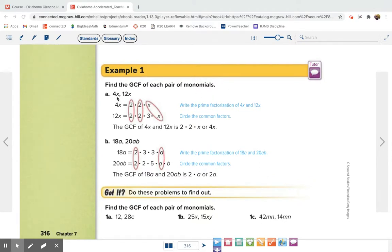So on this first one, they give us 4x and 12x. So what we do is we are going to break that number down and list it being multiplied, but as only prime numbers. So for example, 4x. Well, we don't know what x is, but 4 we know is 2 times 2.